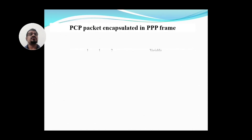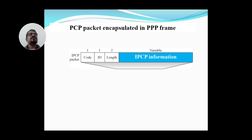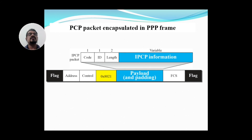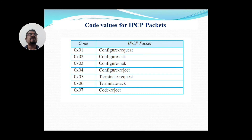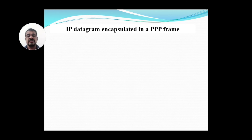The Network Control Protocol used with IP is IPCP (Internet Protocol Control Protocol). The IPCP packet contains code, ID, length, and original information — all encapsulated in the PPP payload field. IPCP packet codes include: Configure-Request (1), Configure-Acknowledgement (2), Configure-Negative-Acknowledgement (3), rejection (4), Terminate-Request (5), Terminate-Acknowledgement (6), and Code-Reject (7).